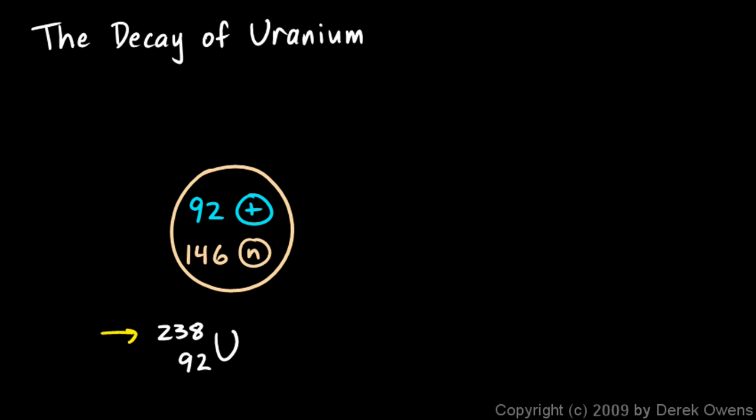The mass number is 238. That's the total number of particles in the nucleus. If you add up these two numbers, 92 and 146, you get 238. There's a total of 238 particles in the nucleus.